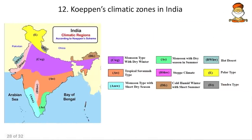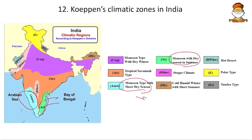The Köppen climate zones in India: AMW means monsoon type with short dry season — the monsoon stays longer so the dry season is short. AS means monsoon with dry season in summer — this applies to areas like the Coromandel Coast that get winter rainfall. BShW means Steppe climate — in the Hyderabad-Karnataka region, some continentality exists as the coasts are far away. AW means Savanna type — although continental, these areas are exposed to coasts, so not quite Steppe.